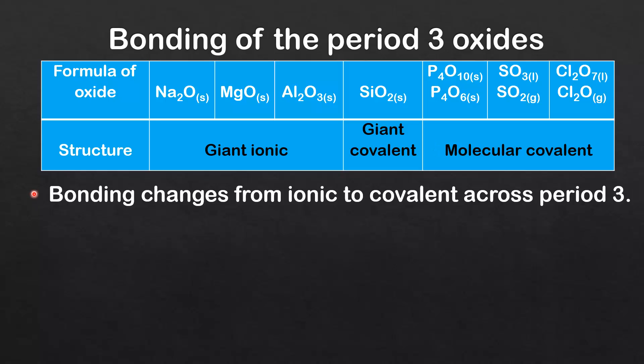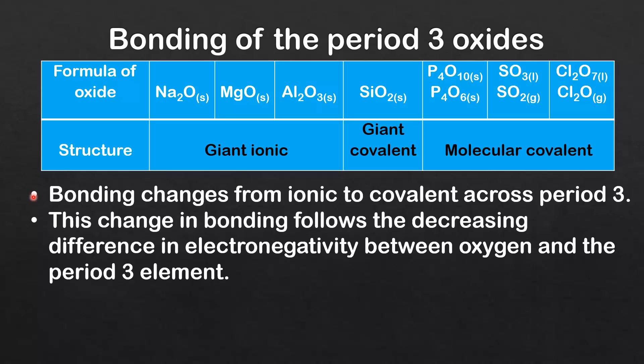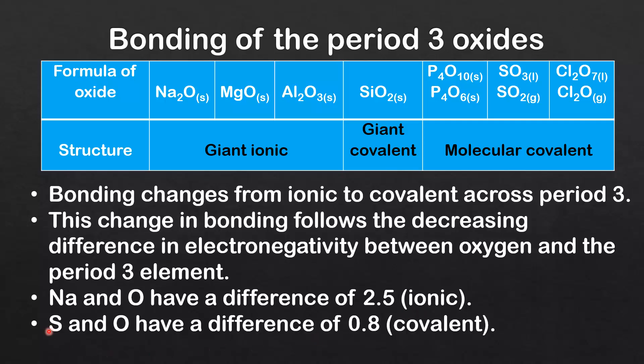As you can see, bonding changes from ionic to covalent across period 3. This change in bonding follows the decreasing difference in electronegativity between oxygen and the period 3 element. For example, sodium and oxygen have a difference of 2.5 units on the Pauling scale, resulting in ionic bonding. Sulfur and oxygen have a difference of 0.8 units, which results in covalent bonding.